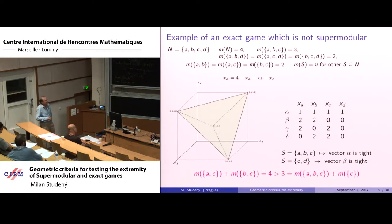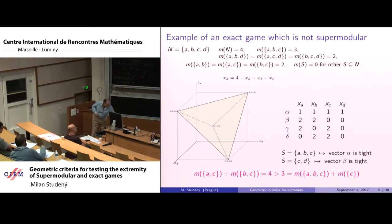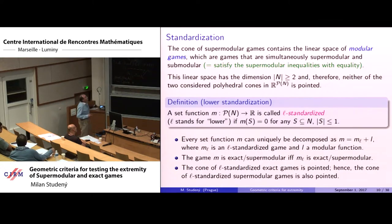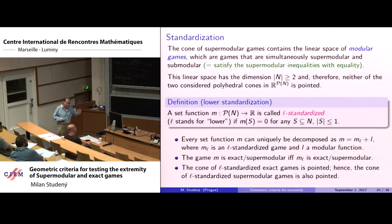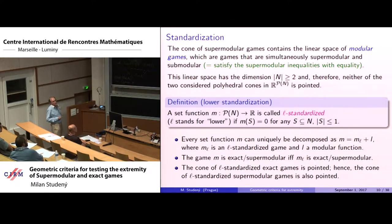Nevertheless, this is an example of a non-supermodular game because the supermodular inequality does not hold. Both cones contain a linear space of modular functions of dimension n, so neither cone is pointed.